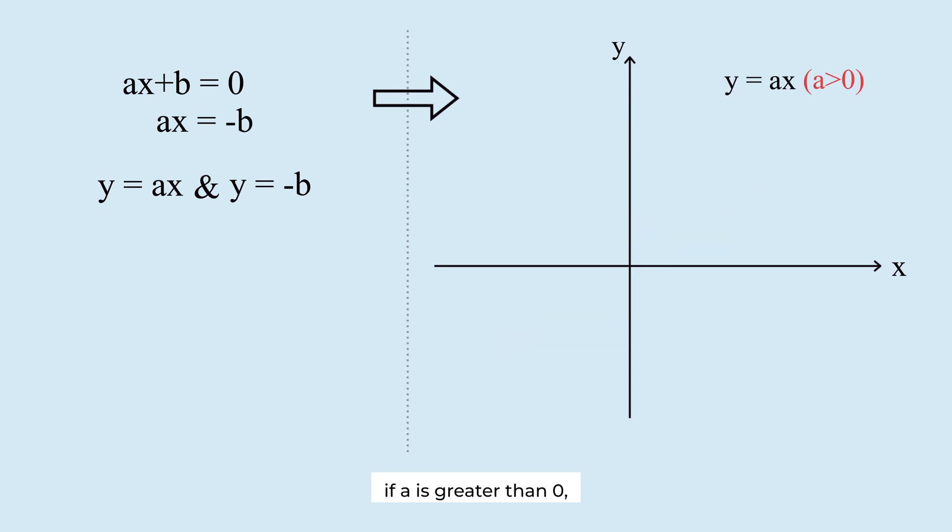If a is greater than 0, the line looks like this. If a is less than 0, it looks like that. If a is 0, then y equals 0, which means the graph is the x-axis.